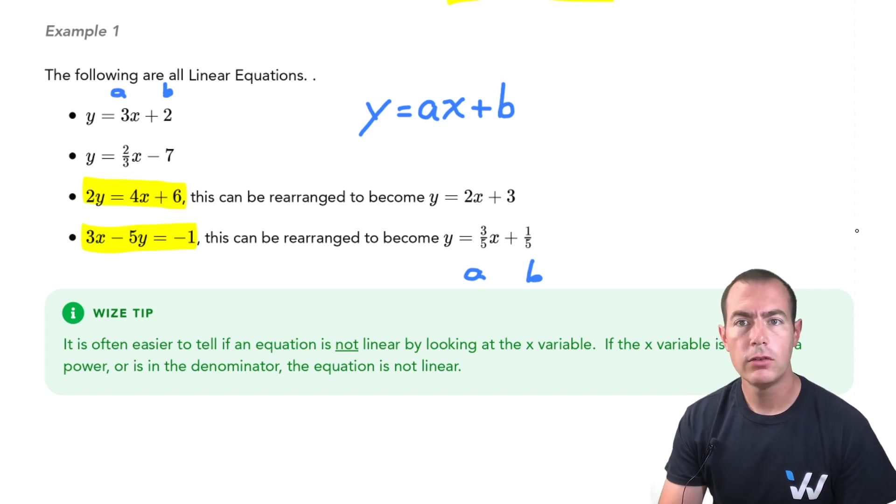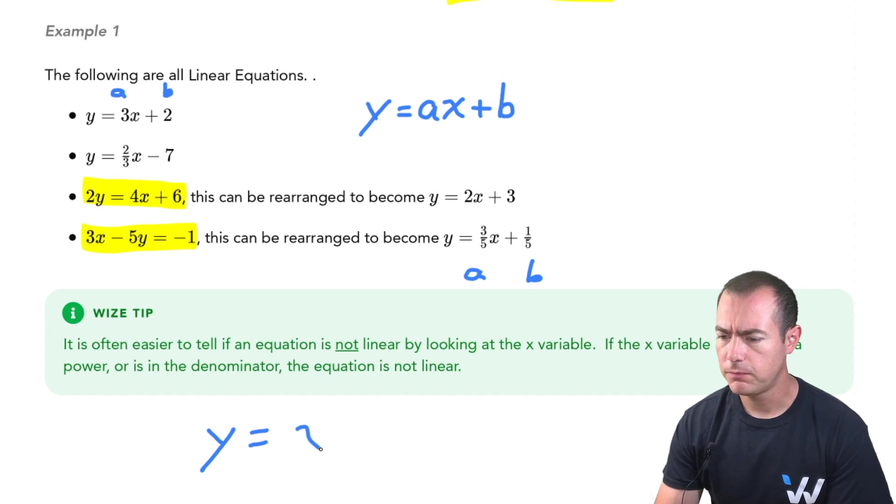Now when it comes to linear equations, it's often easier to see whether something is not a linear equation. Things that you will never be able to put into the proper form is if you have powers on your variable like an x squared, there's no way that's going to fit the proper form because x has the wrong power entirely.